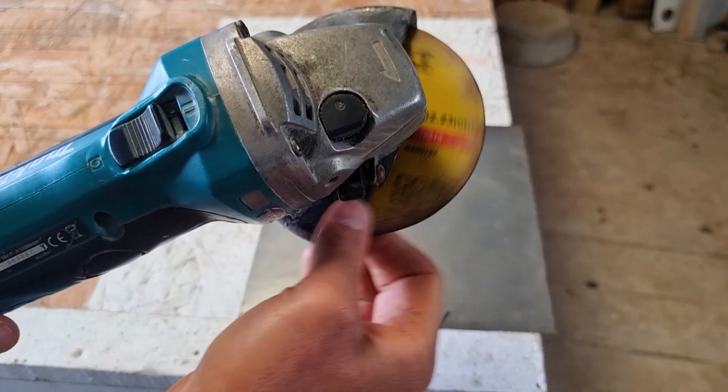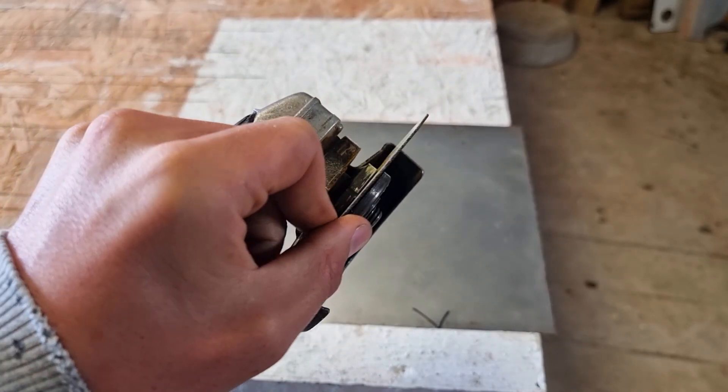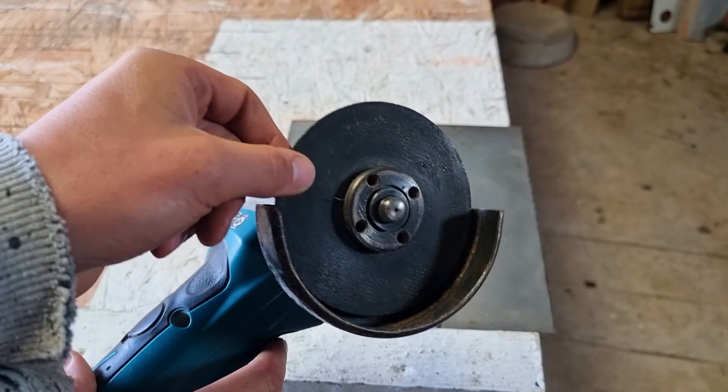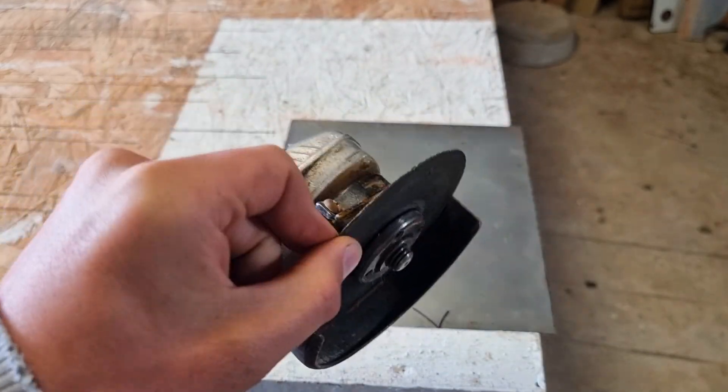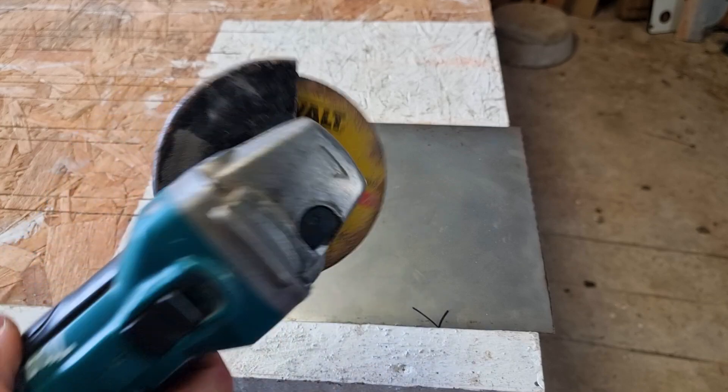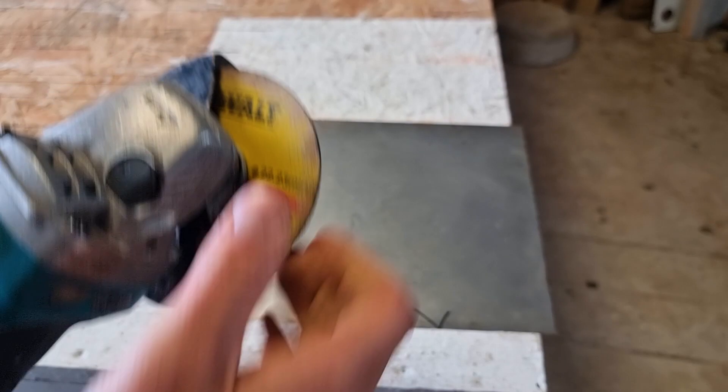This will normally say whether it's a metal cutting disc. Normally you can tell because metal cutting discs are quite thin. This one's 1.2mm thick and they go up to about 2.5mm thick. So always make sure you've got a metal cutting disc. We'll attach the disc we've used in the description so if you're short of any you can get some through that.